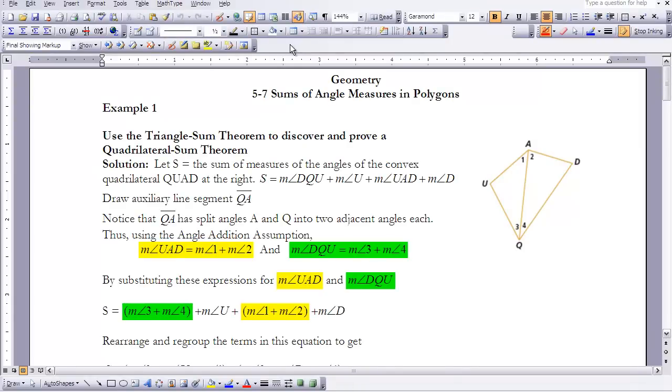This is Geometry Lesson 5-7, Sums of Angle Measures and Polygons. In the last lesson we talked about the Triangle Sum Theorem, where all the angles of a triangle had a sum of 180 degrees. We're going to use this sum theorem to discover and prove a quadrilateral sum theorem, and then we're going to apply it to the Polygon Sum Theorem.